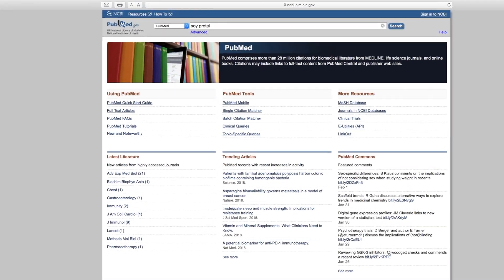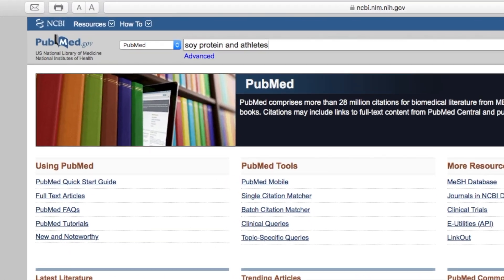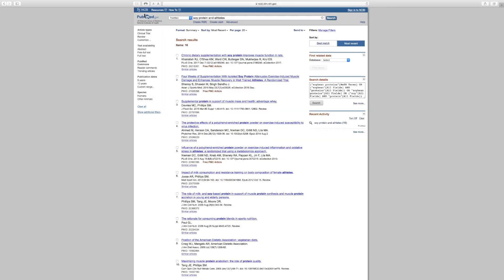Let's find an article on soy protein and athletes by typing soy protein and athletes into the search bar. Once you hit enter, you'll see all the potential articles populate.